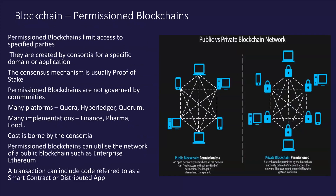Permissioned blockchains — again as the name suggests, these are private blockchains. They are based on access controls which restrict who can participate in the network, and there are one or more entities which control the network, leading to reliance on third parties to transact. You would typically see this in industry-specific applications — for example, a group of companies within the pharmaceutical industry using this type of architecture. Hyperledger is probably the most widely recognisable platform, with many implementations across finance, pharmaceutical, and food sectors.